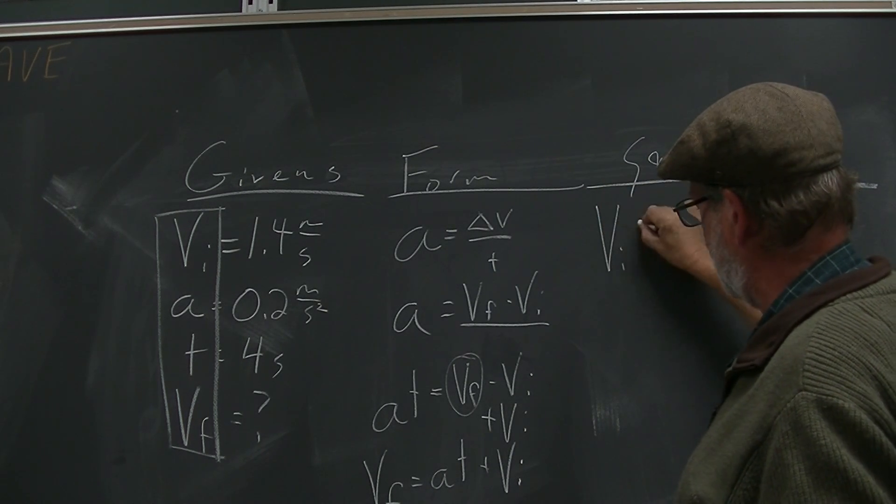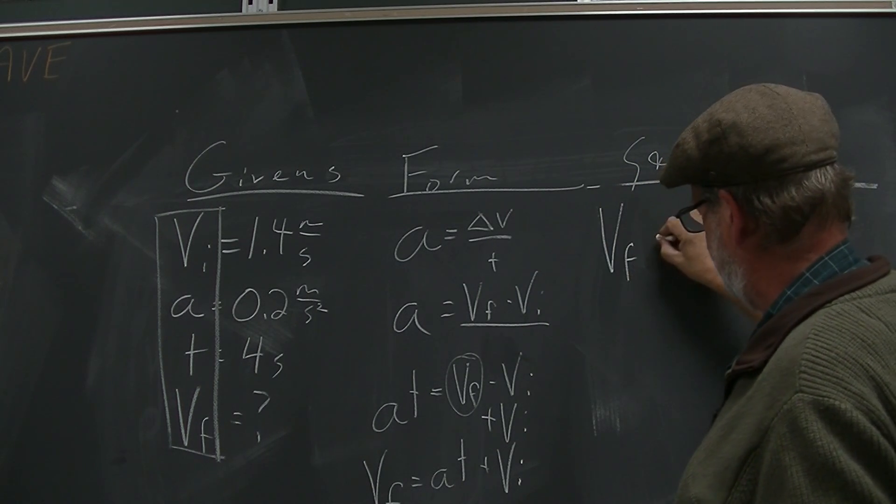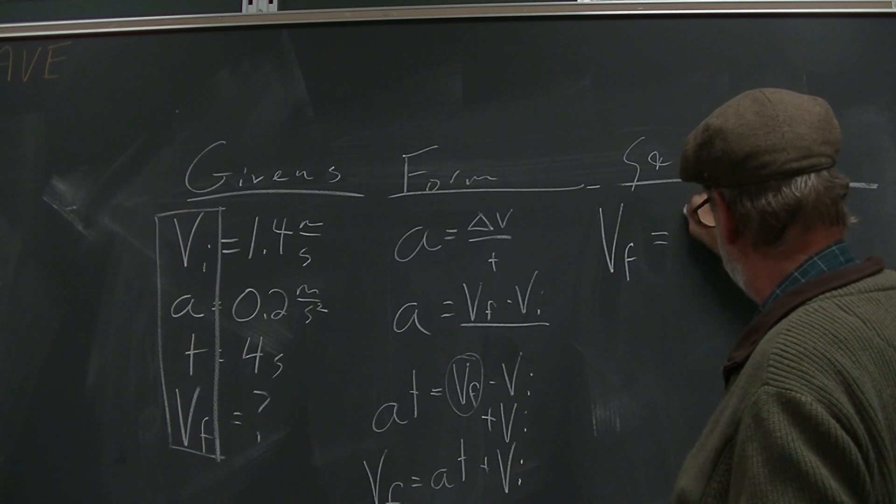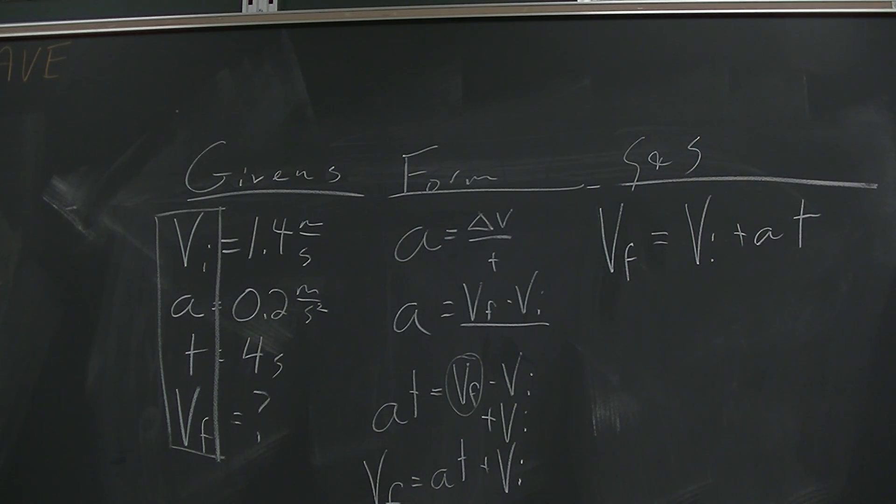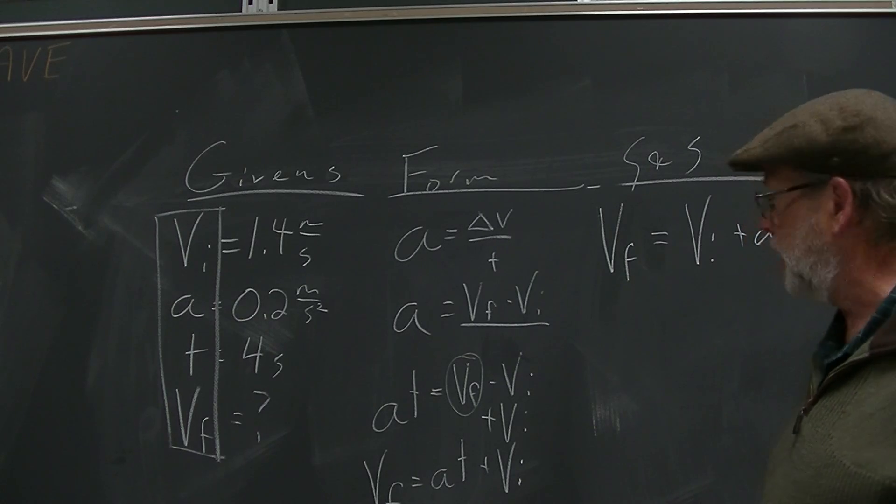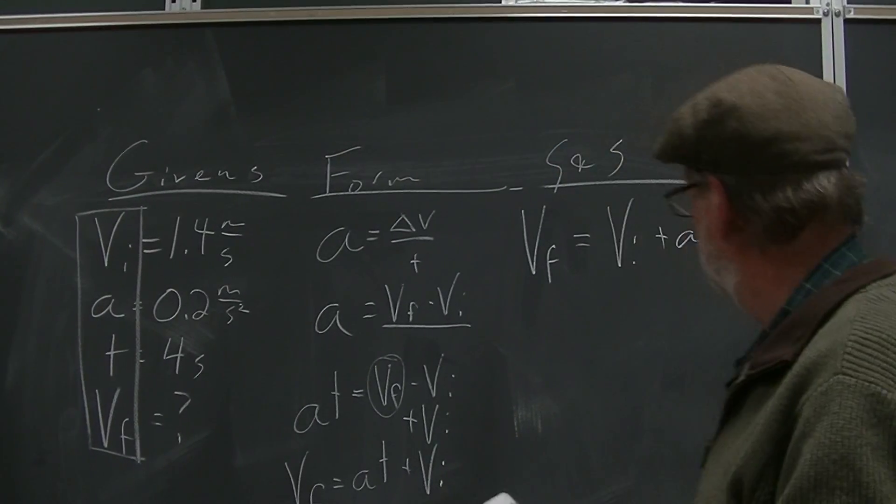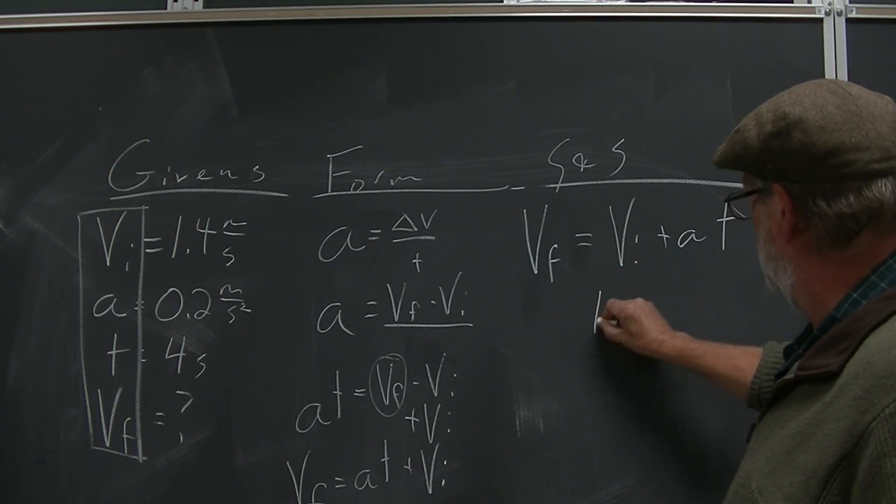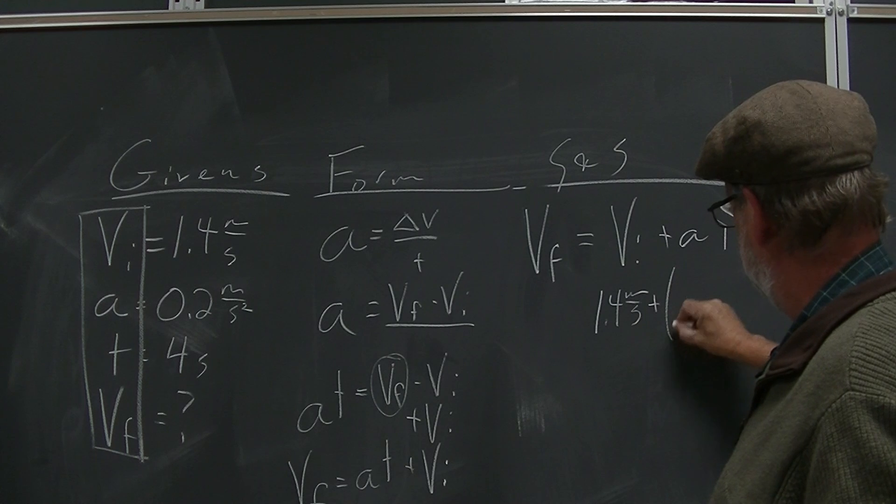Please make sure you rewrite the formula: VF equals VI plus AT. Works out nicely. So we're going to solve by substituting in right here.